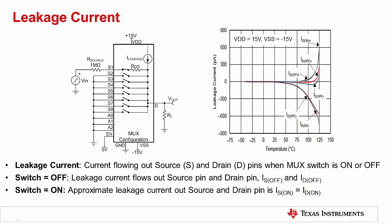The first parameter we are discussing here is leakage current. Leakage current is an important parameter, as it contributes to DC errors both when the switch is on and when it is off. The multiplexer data sheet has many specifications related to leakage current, including leakage current flowing through the source pin, IS, or the drain pin, ID. Leakage current is specified as current flowing through the source, S, and drain pin, D, when the MUX switch is on or off.